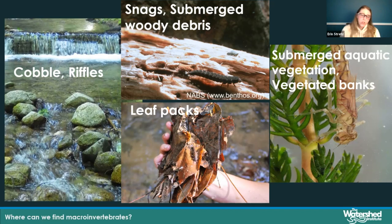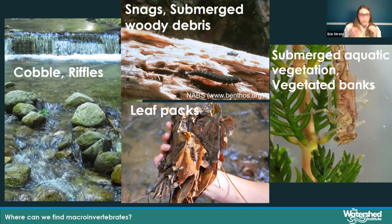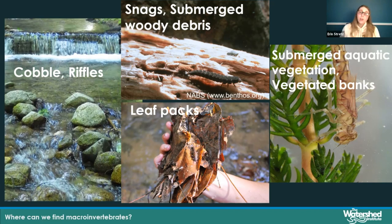Snags — logs or submerged woody debris, basically a grouping of twigs that's fallen into the water and allowed to decay — create nooks and crannies where tiny organisms can crawl in and find a home away from predators. Leaf packs are another great place to look; they provide shelter and are also a great food source for organisms that like to munch on coarse particulate organic matter.